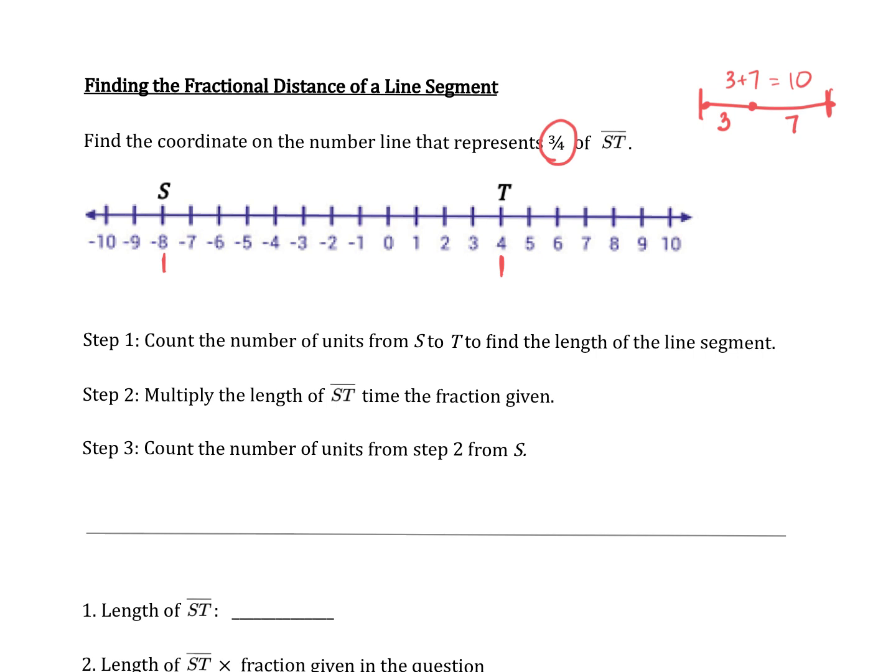So the steps are written out here for us. The first thing we do is we're going to count the total units from S to T to find the total length of the segment. You can count individually, which is fine, but I know that from negative 8 to 0 is 8 units, and 0 to 4 is 4 units, so that's a total of 12 units. So the length of ST is 12.